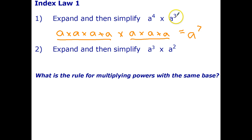Now if you look at the expression and you look at the answer, you can probably guess what index law number one is going to tell us. But let's do one more example just to be sure. So a cubed times a squared. Well I've got a total of five a's multiplied together and that comes out to be a to the fifth.